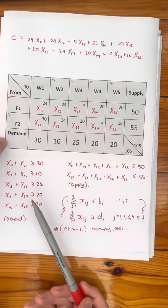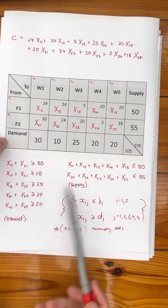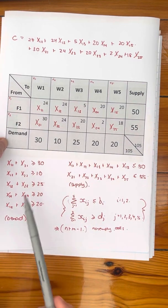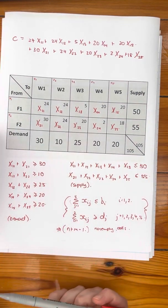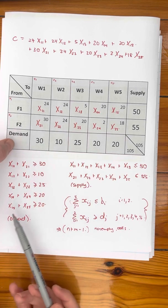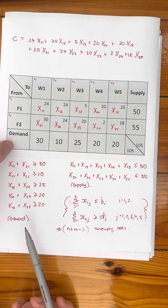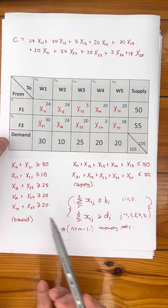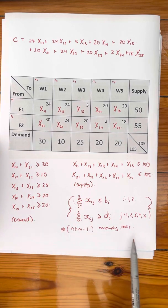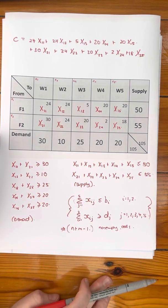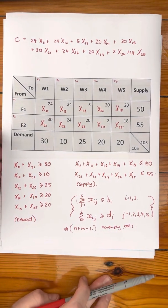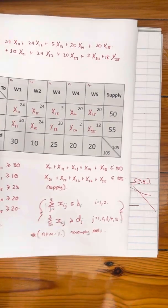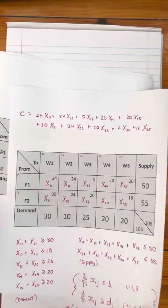If one of these equations is represented by a combination of the others, we don't have to stress about all of those cells — the rest of them are just going to be equal to zero.